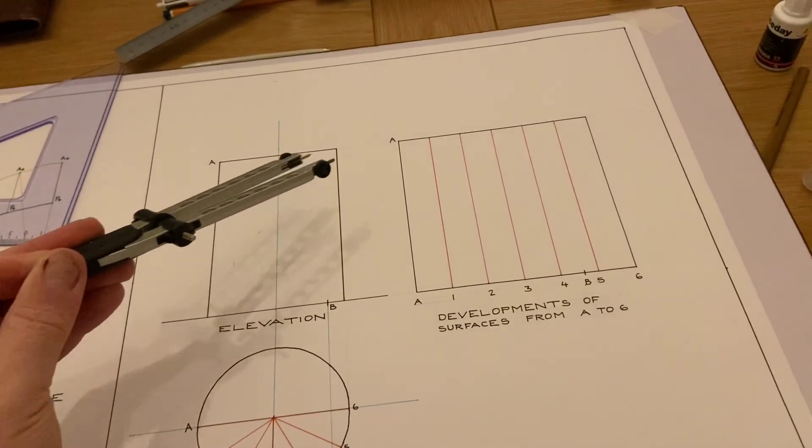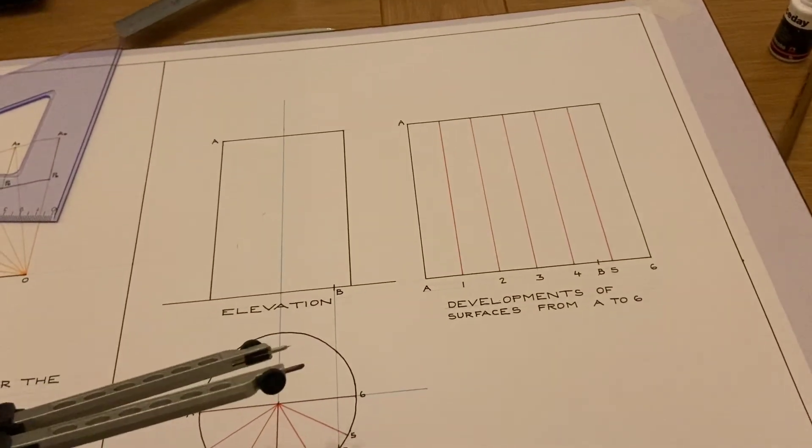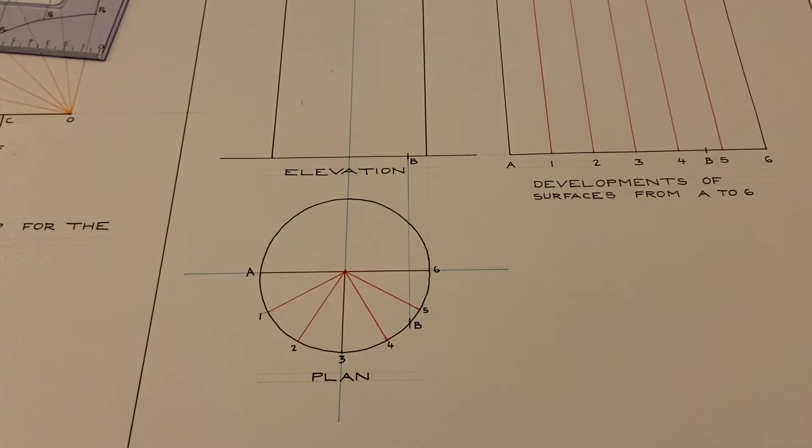We bring across the top of the elevation to give us the top of the development and we complete that rectangle. The next thing that we have to do is find point B on the development.